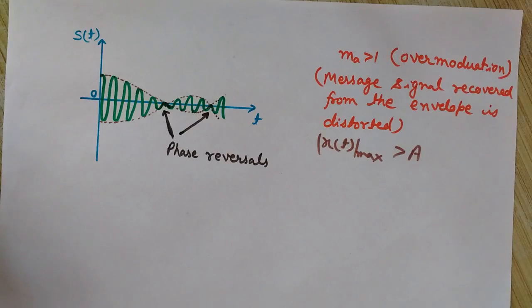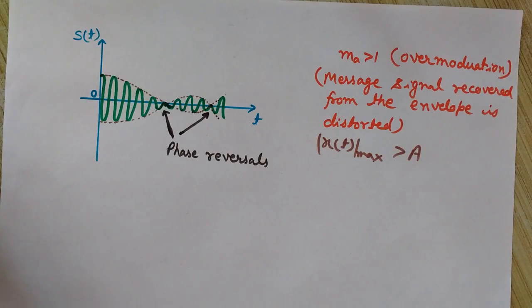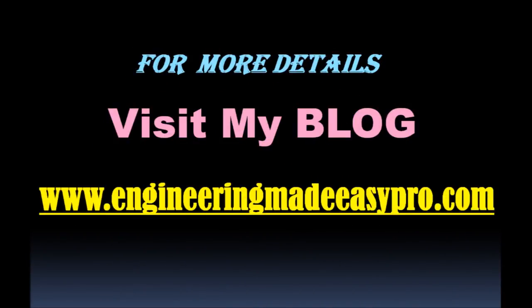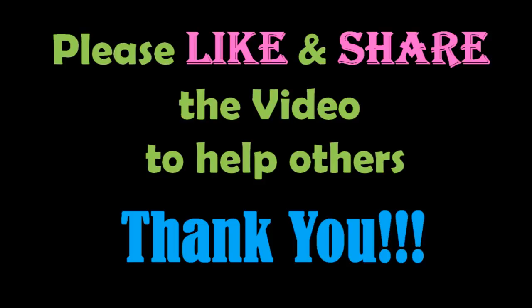So that was all about the different cases of modulation index — when it is less than one, equal to one, or greater than one (over-modulated). We need ma to be less than or equal to one to recover the modulating signal without any distortion from the envelope of the modulated wave. Thank you for watching. For more videos, subscribe to the channel Engineering Made Easy, and visit the blog at www.engineeringmadeeasypro.com — the link is in the description. See you in the next video!